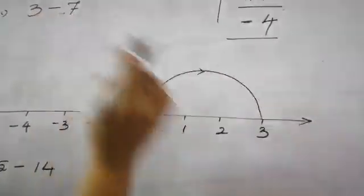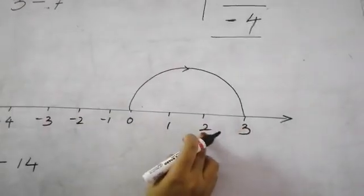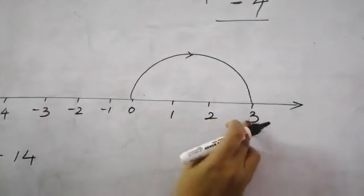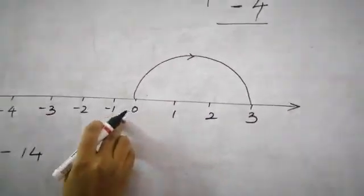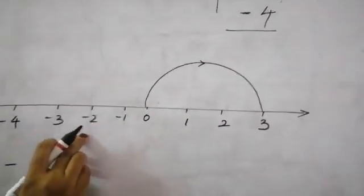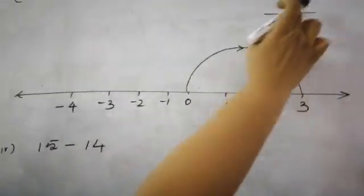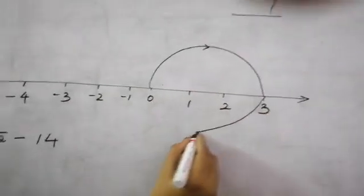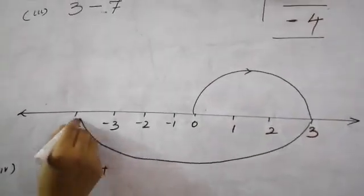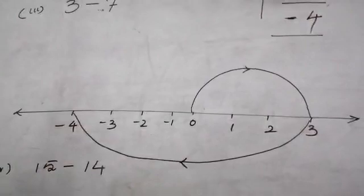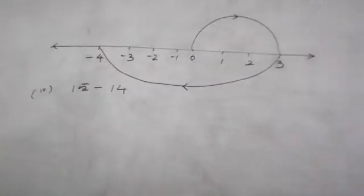And when you are doing minus 7, see this, minus 1, reverse, left side. Minus 1, minus 2, minus 3, minus 4, minus 5, minus 6 and minus 7. Your answer is at minus 4. So start from 3 and stop it at minus 4. Left side. Hope so. Is it clear? Everyone I think so.